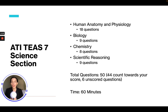The ATI TEAS 7 science section consists of 18 questions in human anatomy and physiology, 9 questions in biology, 8 questions in chemistry, and 9 questions in scientific reasoning. The total number of questions you will take is 50, but only 44 will count towards your score because there are 6 unscored questions. These are typically questions they are testing out for future exams. The time limit is 60 minutes, so you have roughly a little over a minute per question.